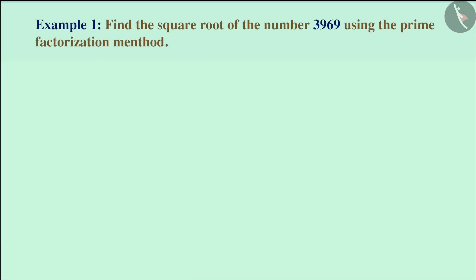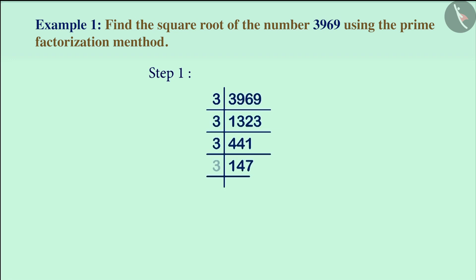Find the square root of the number 3969 using the prime factorization method. In the prime factorization method, we will first do the prime factorization of the number 3969, and we will know all its prime factors this way.